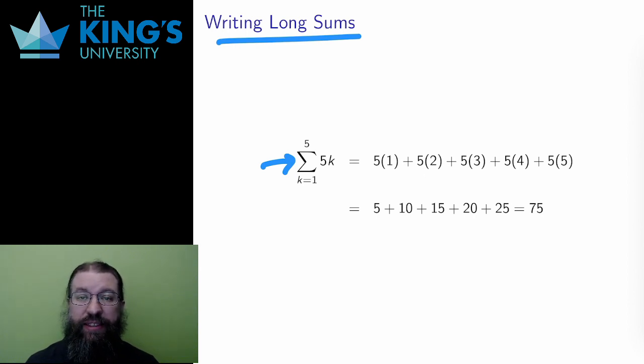First, there is an index. This is some variable that appears below the sum. It's going to keep track of the pieces of the sum. The index has bounds, where it starts and where it ends.